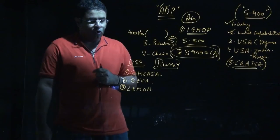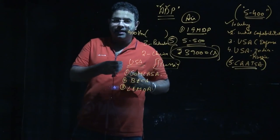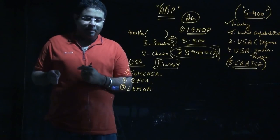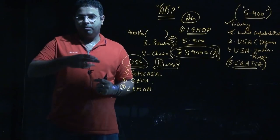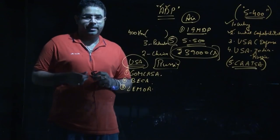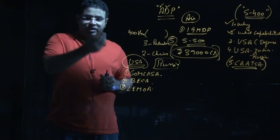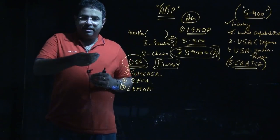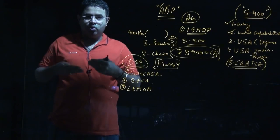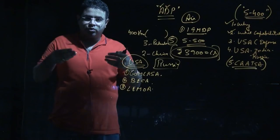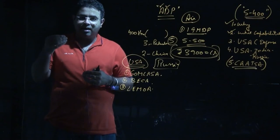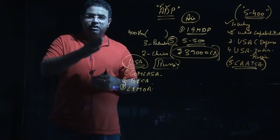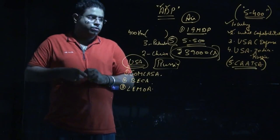These three agreements - COMCASA, BECA, and LEMOA - are with United States of America regarding defense. We will understand these three agreements in detail in the 16th class. It's not that India has defense engagement only with Russia. India has defense engagement with USA too. Recently, India's two-plus-two agreement and two-plus-two talks are about to begin between India and United States of America. These two-plus-two talks will be related mostly to India's defense sector.